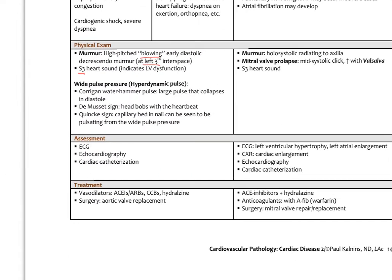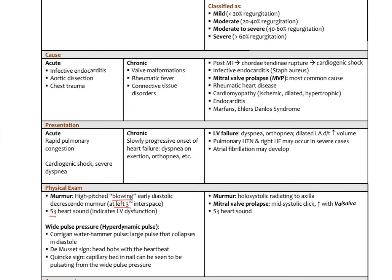Assessment for aortic regurgitation involves ECG, echo, and cardiac catheterization. Treatment includes vasodilators like ACE inhibitors, ARBs, calcium channel blockers, or hydralazine — to decrease afterload so less blood regurgitates back into the left ventricle. Aortic valve replacement is reserved for very severe cases.